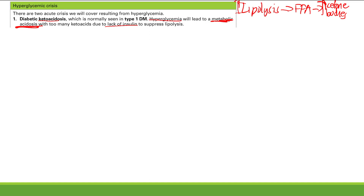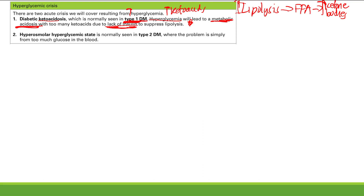This is what causes symptoms — increased blood sugar and increased ketoacids. It usually only happens in type 1 diabetes because the whole problem is lack of insulin. In type 2, we said it was hyperosmolar hyperglycemic state, where the problem is simply from too much glucose in the blood — they're not taking medications, so blood glucose keeps going up.